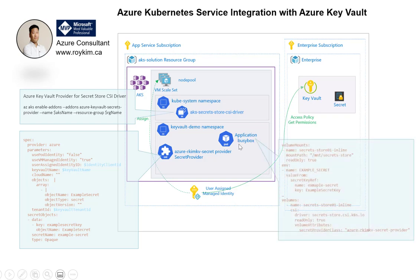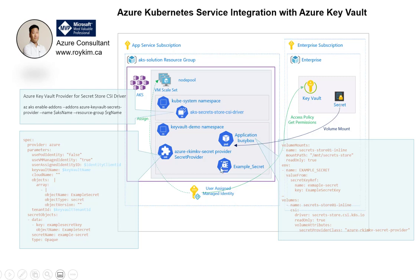We have to go to the pod YAML manifest and define the volume mount. When we use this Secret Provider Class to bring in the secret, it comes in as a file, so we need to define a mount path in the container. As an option, we can also define an environment variable. For that, a Kubernetes secret is synced up and also created, so that an environment variable within the pod is created as well. Here we're referencing the Secret Provider Class that was defined to support the exact mounting of the secret.